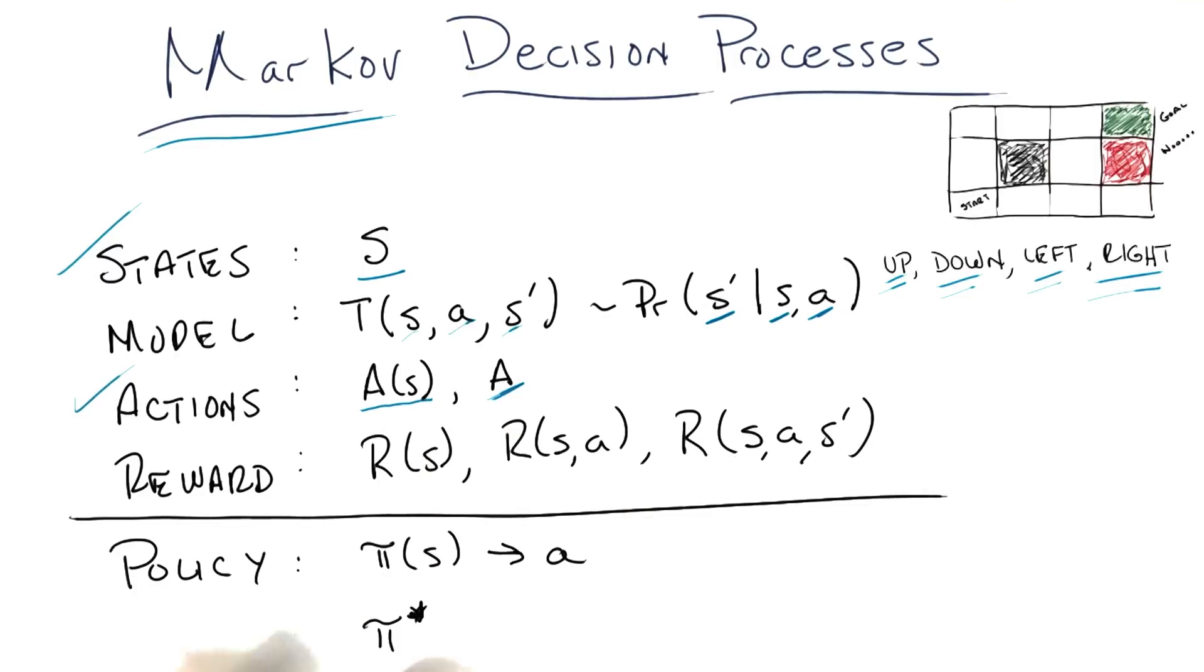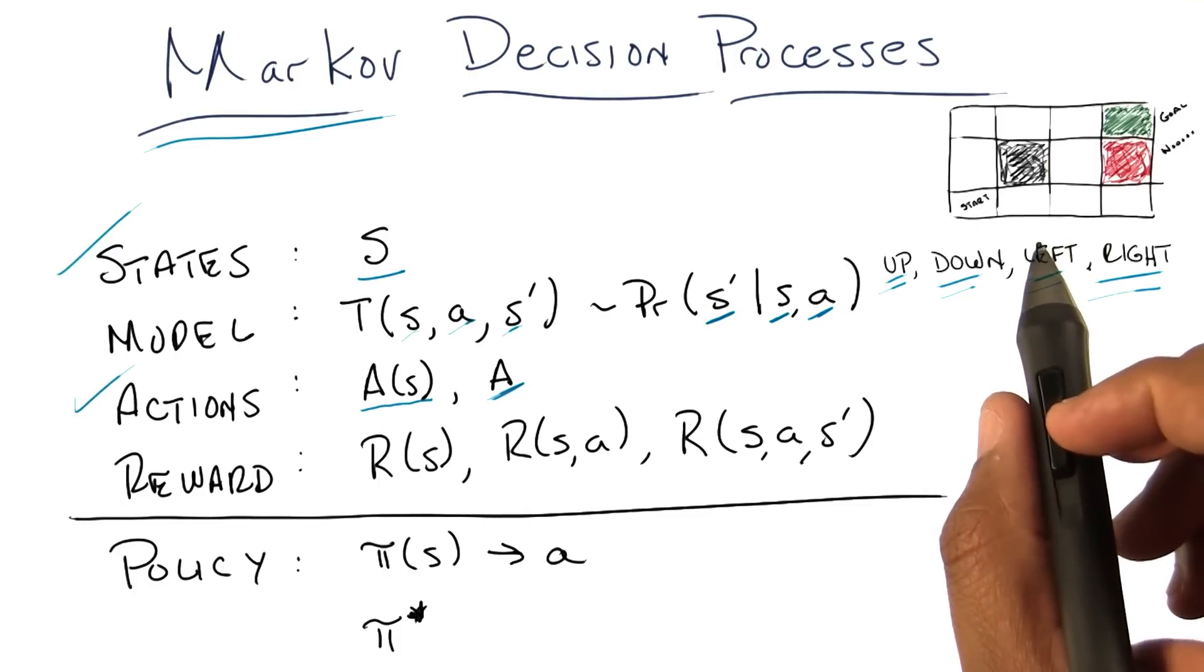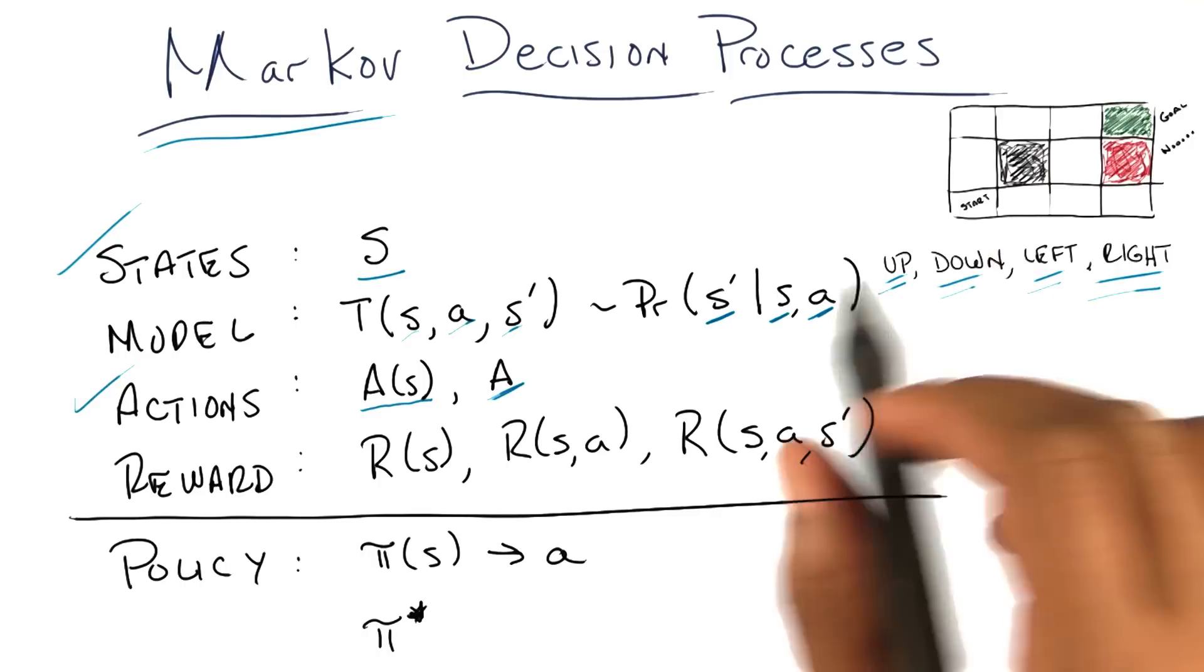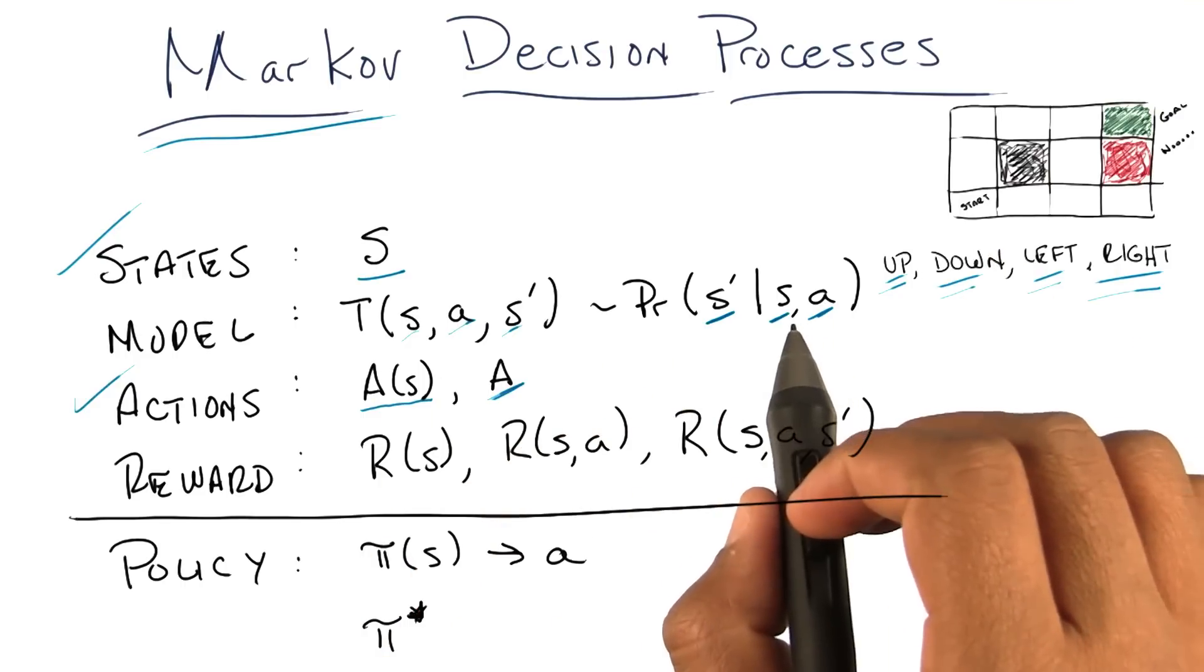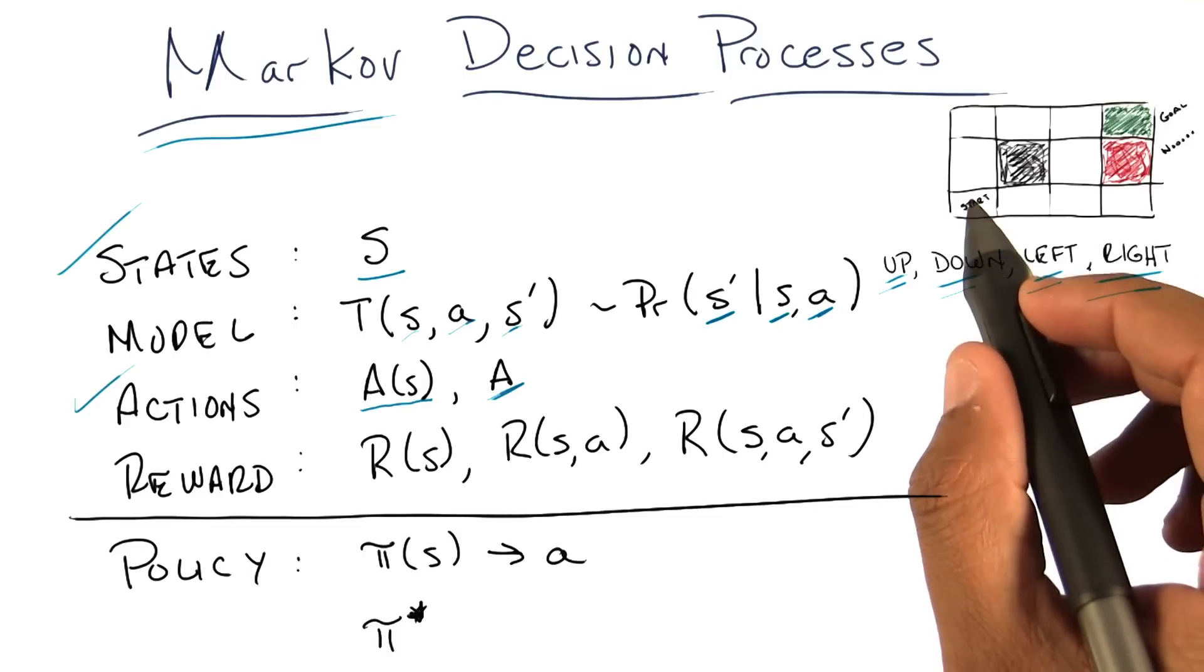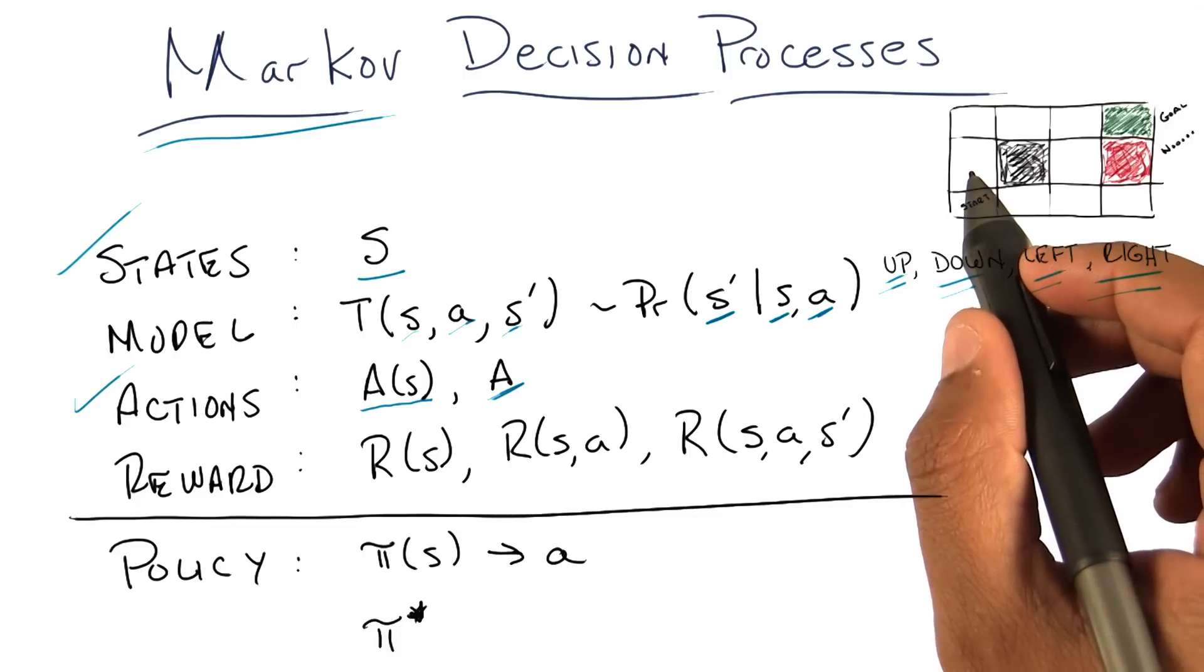So, for example, if you think about the deterministic case, where there was no noise, then this is a very simple model. If I'm in the state, the start state, and I take the action up, then what's the probability I end up in the state immediately above it? Was that point eight?